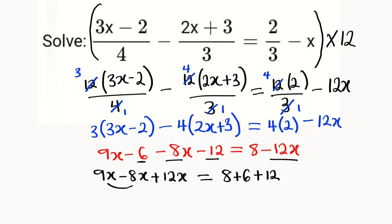So we have 9x minus 8x plus 12x on the left. To the right, we have 8 plus 6, which is 14, then 14 plus 12 is 26. So we have 12x equals 26. What we are looking for is x, therefore we can divide both sides by 12.